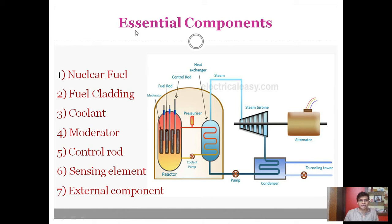Let us discuss the essential components of nuclear power plants. A nuclear power plant contains mainly seven components. The first is nuclear fuel. Second is fuel cladding — each fuel rod is surrounded by a coating material called fuel cladding. Third is the coolant, whose role is to transfer the heat generated by nuclear reactions into the heat exchanger.